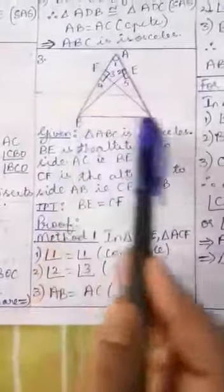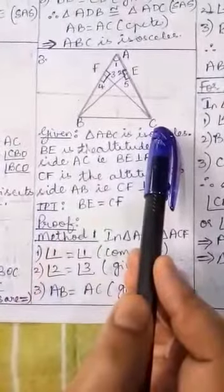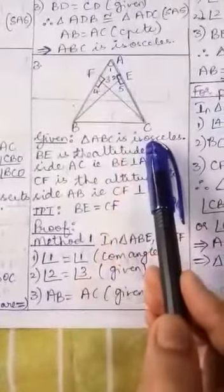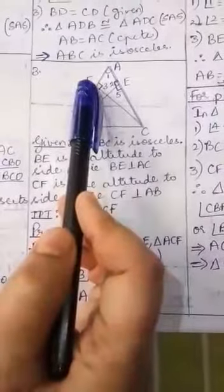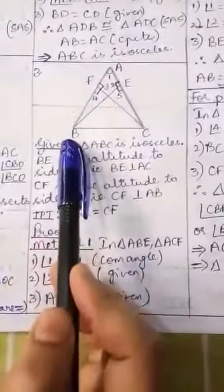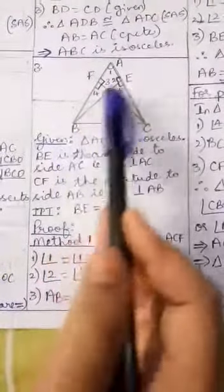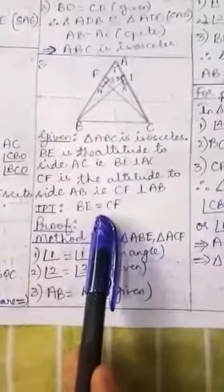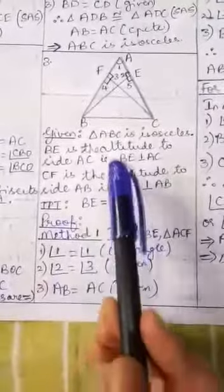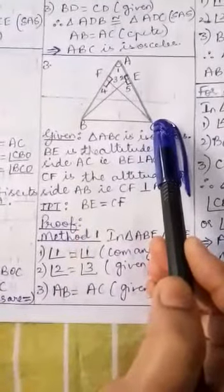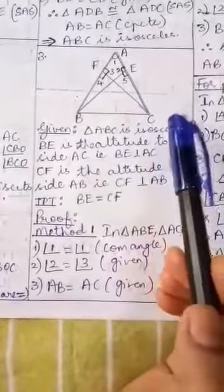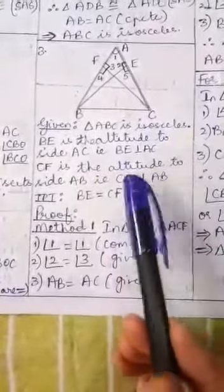Here we have a triangle ABC which is an isosceles triangle with AB equal to AC. BE is the altitude on the side AC, and CF is the altitude on the side AB. Given this, we need to prove that the altitudes BE and CF are equal. In other words, in an isosceles triangle the altitudes on the equal sides are also equal. This is the statement we have to prove.